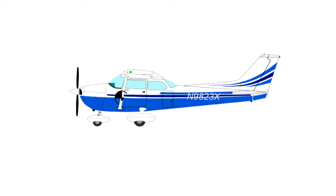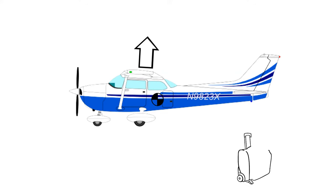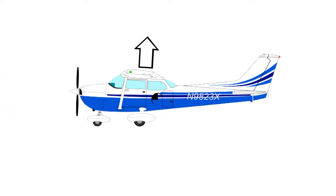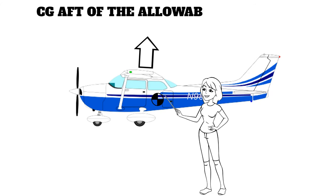Remember, airplanes are designed so that the center of gravity is typically in front of the center of lift. But what would happen if we moved the center of gravity behind the center of lift? You could potentially do this by putting too much weight in the baggage compartment, or by putting too much weight in the back seat, like passengers. With the CG behind the center of lift, the airplane is much less stable. If the center of gravity is too far back, it could be aft of its allowable limits.